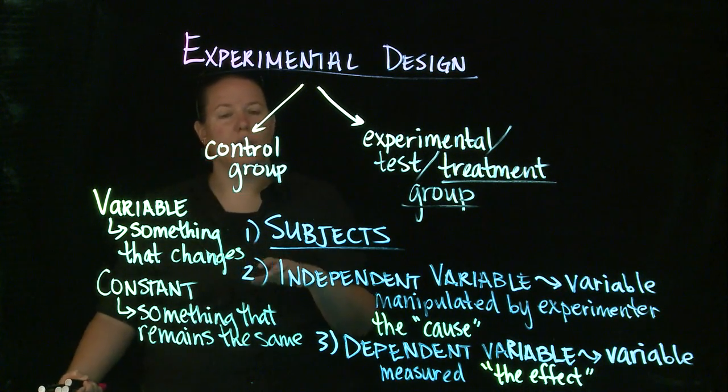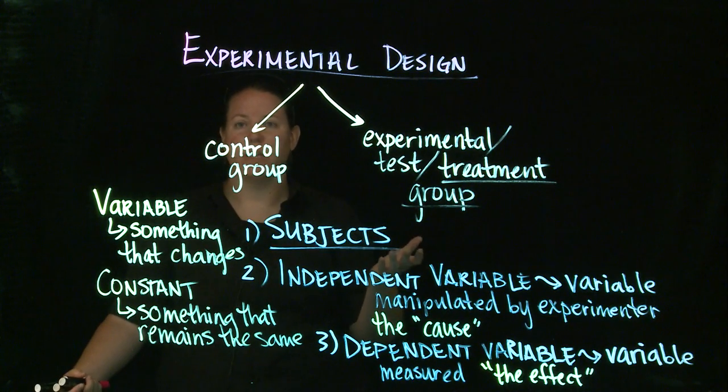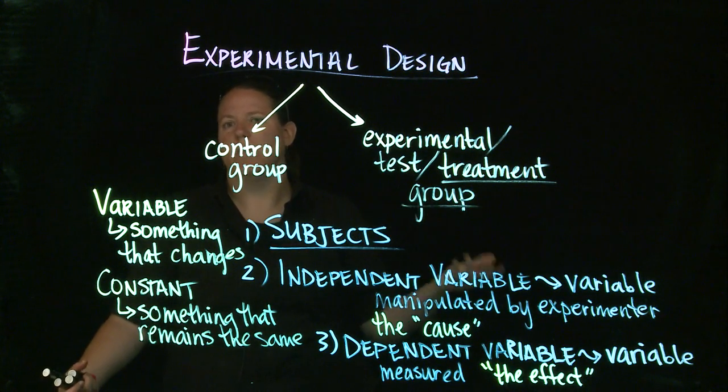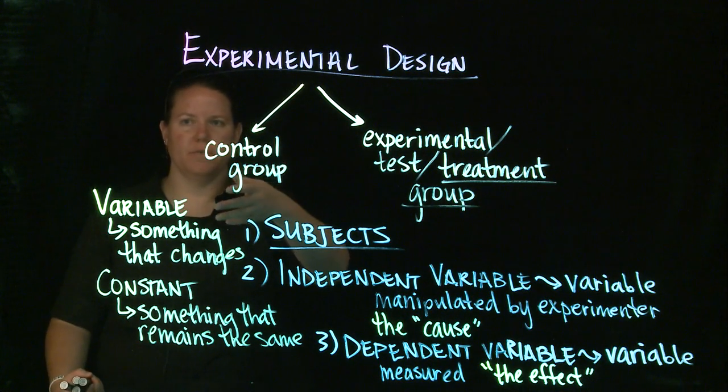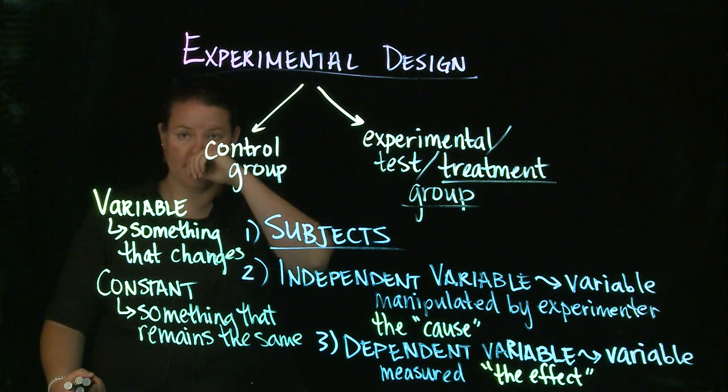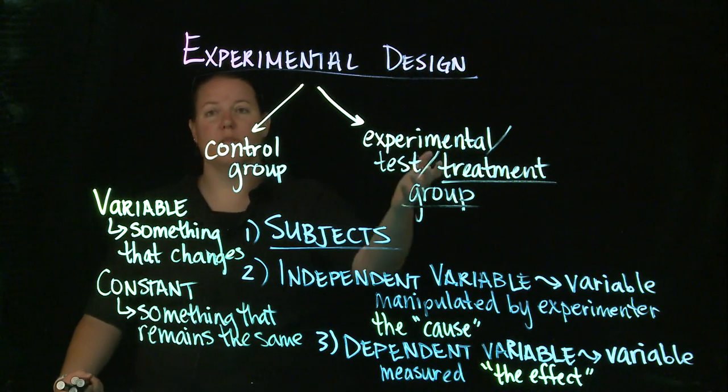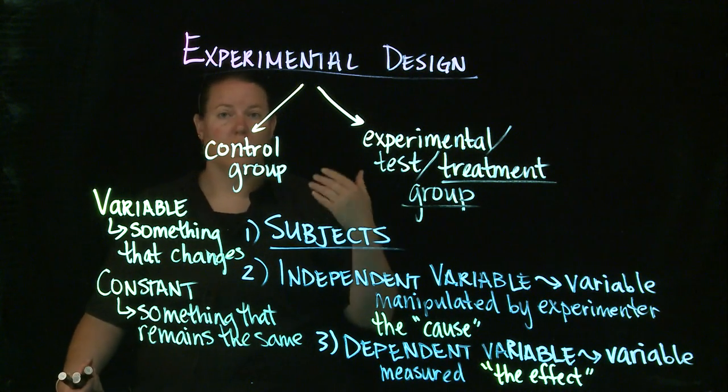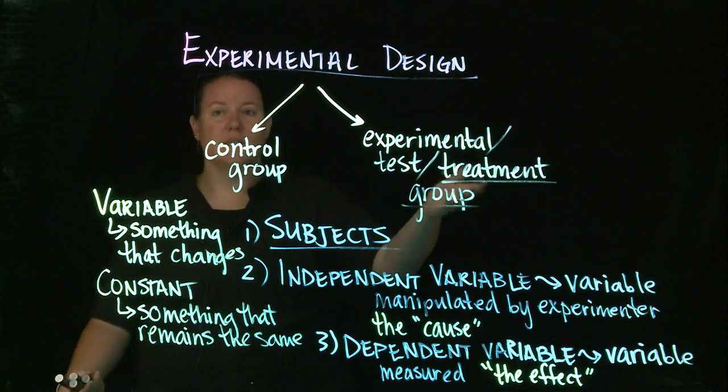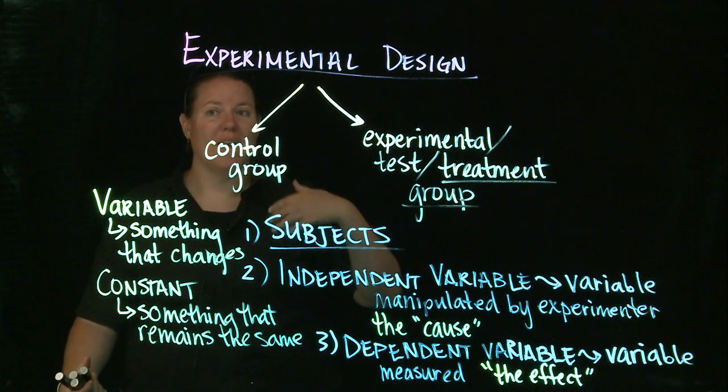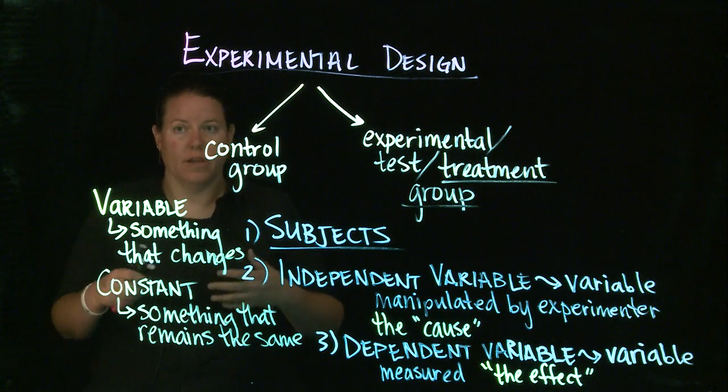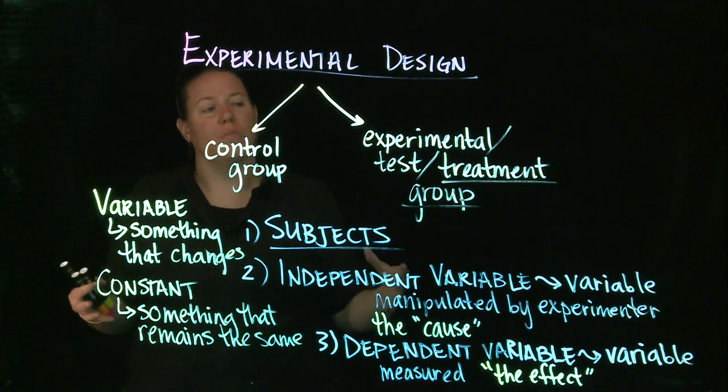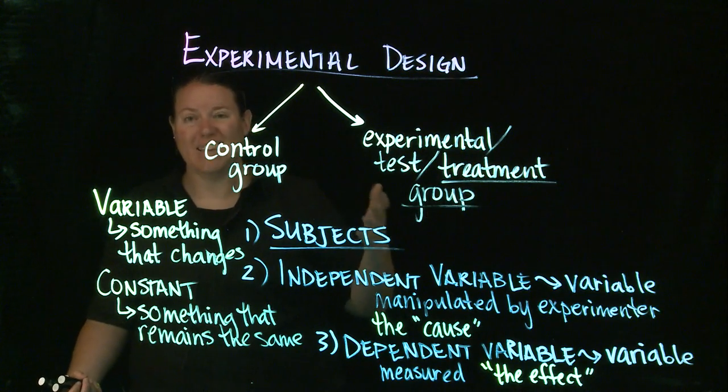So usually when you're talking about an experiment, the best kinds of experiments, particularly in the medical field, is to do some kind of placebo moment. So when you give a new drug or something along those lines to the test group to find out whether that has an effect on whatever you're testing on, like if they have some kind of disease.